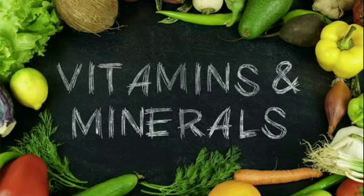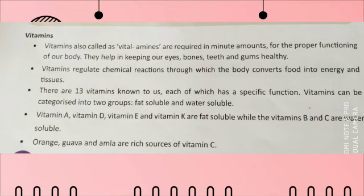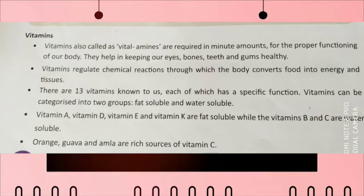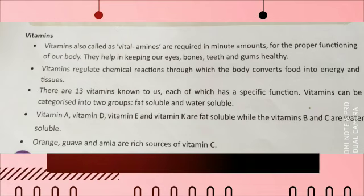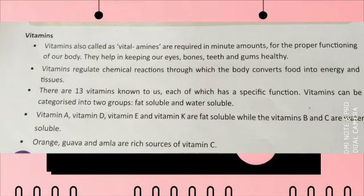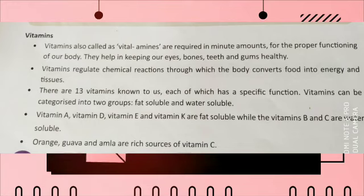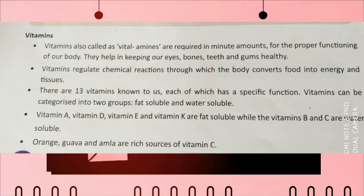Vitamins and minerals are known as protective food as they protect our body from disease-causing microorganisms and help strengthen the immune system. There are altogether 13 vitamins, divided into two categories: fat-soluble vitamins and water-soluble vitamins. Minerals are also present in many types and are required in minute quantities, like vitamins. They play a very important role in keeping our body healthy. All fruits and vegetables are good sources of vitamins and minerals.